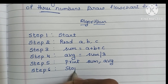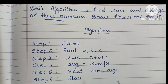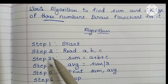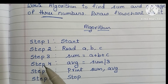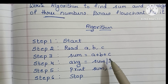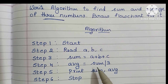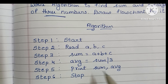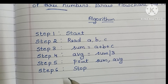This is the complete algorithm to find sum and average of three numbers: Step 1 — Start. Step 2 — Read a, b, c. Step 3 — Sum = a + b + c. Step 4 — Average = sum / 3. Step 5 — Print sum and average. Step 6 — Stop.